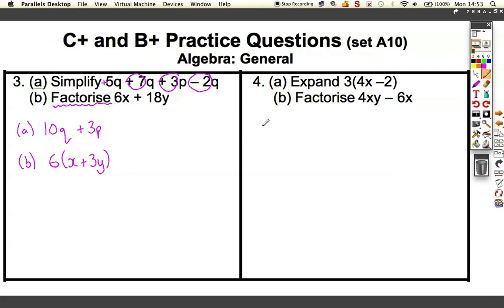Similar set of questions here. Standard algebra. Expand these brackets. 3 multiplied by everything inside the bracket. 3 times 4x, 12x, and it's going to be a subtract. 3 times 2 is 6, or you can think of it as 3 times minus 2, which is why I've got minus 6 here.